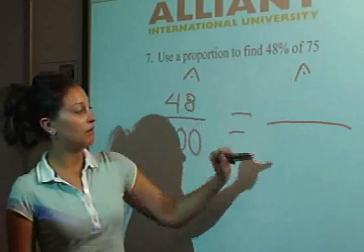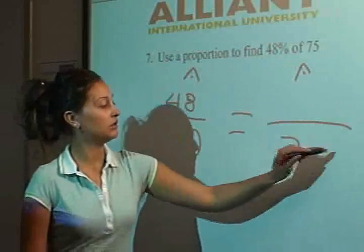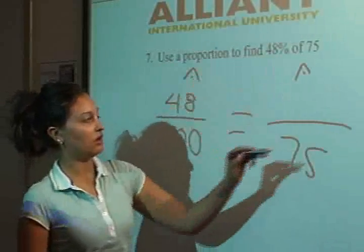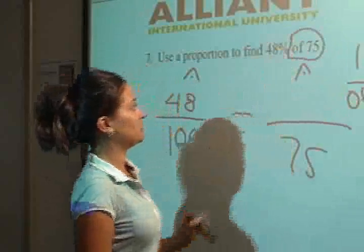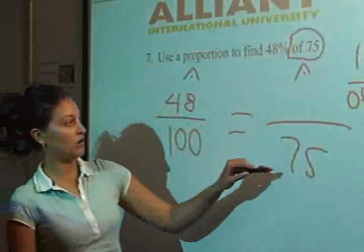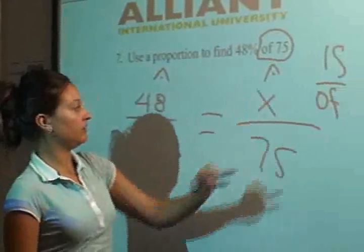We are going to put it on the bottom because we remember our rule of is over of. And since 75 is closer to of, it is going to go on the bottom. So here we are going to fill that in with x.